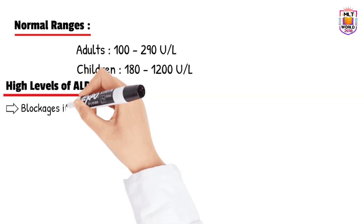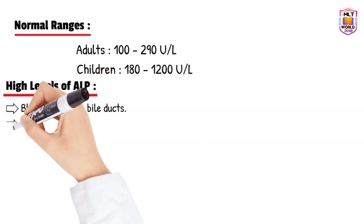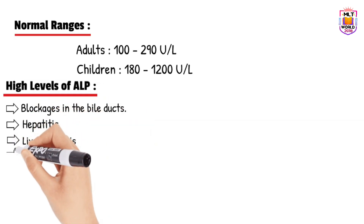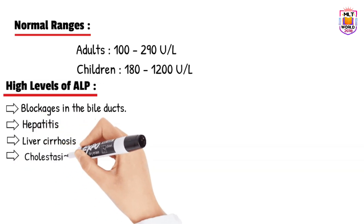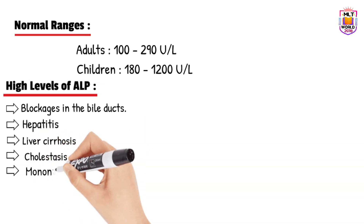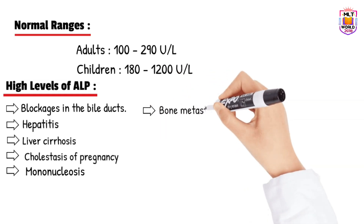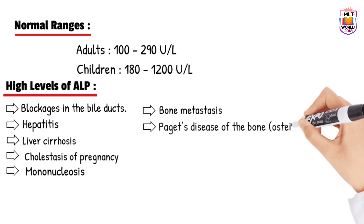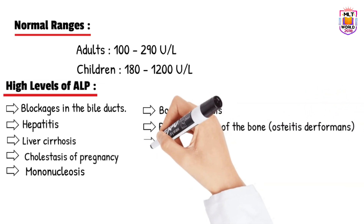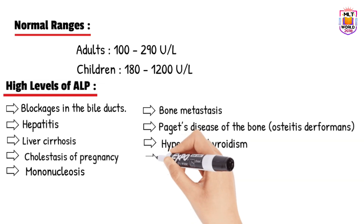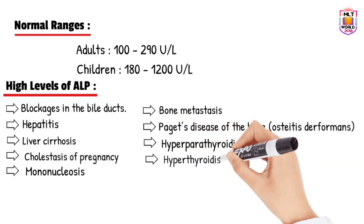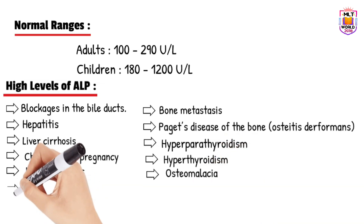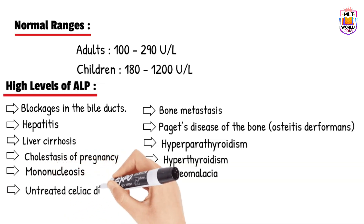If the ALP level is high, it can indicate diseases such as: blockage in the bile duct due to gallstones, hepatitis, liver disease, cholestasis of pregnancy, mononucleosis, bone metastasis, Paget's disease of the bones (osteitis deformans), hyperparathyroidism, hyperthyroidism, osteomalacia, and untreated celiac disease.